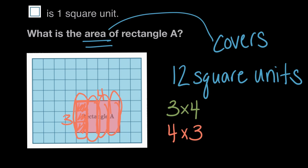So no matter which of these we solved, whether we counted the square units like in the beginning, or we multiplied the side lengths, the three and the four, in every case we're going to find that this equals twelve square units. The area of rectangle A is twelve square units because it covers twelve square units.